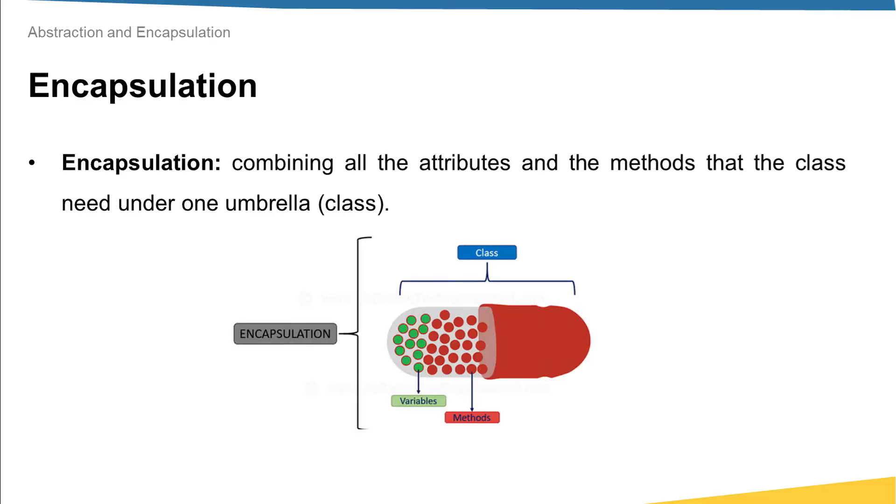If you want to imagine your class, simply think of it like a capsule. Inside this capsule, you have together both the attributes and the methods that process these attributes. Because we are able to combine everything together in one place, encapsulation makes your code easy to be maintained.